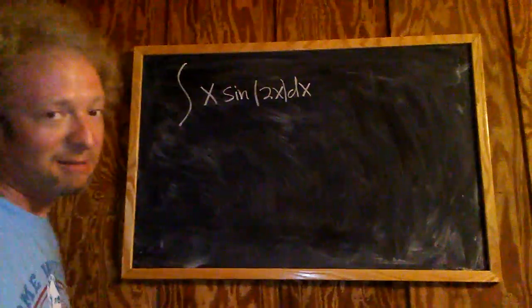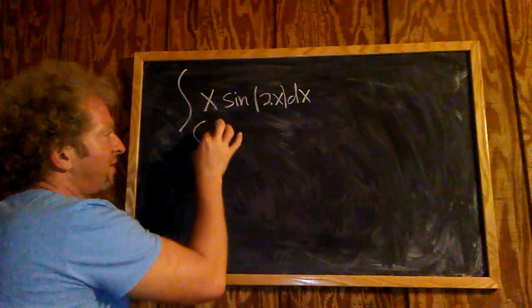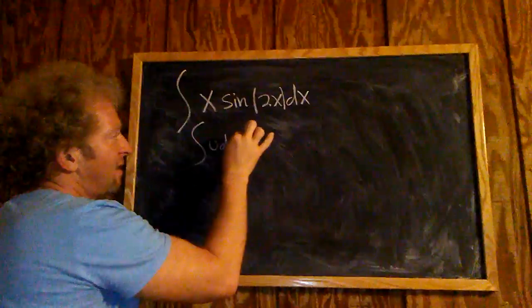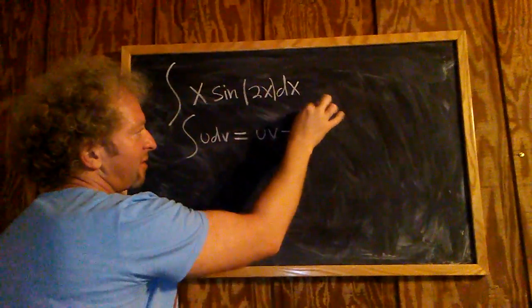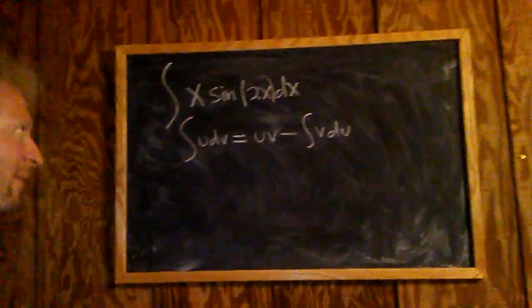So we'll start by running down the integration by parts formula. The integration by parts formula says if you have U dV, this is equal to UV minus the integral of V dU. That's the integration by parts formula.